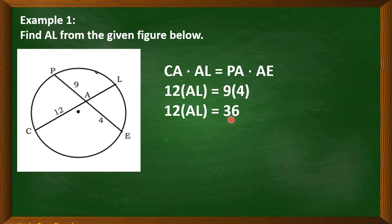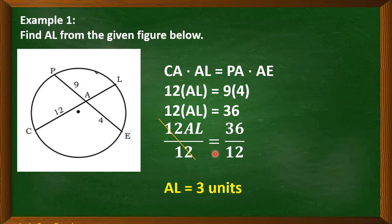9 times 4 is 36. Now, to solve for the length of AL, we have to divide both sides of the equation by 12. So 12AL divided by 12, that is AL. And 36 divided by 12, that is equal to 3. So therefore, the length of line segment AL is equal to 3 units.